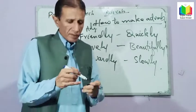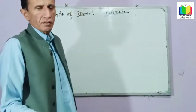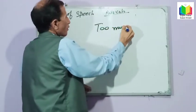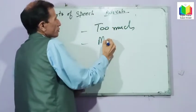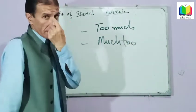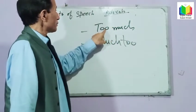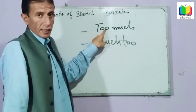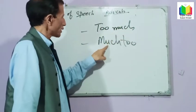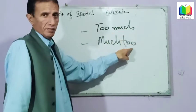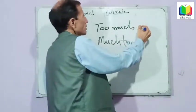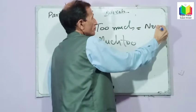After this, the common error we make: too much and much too. Remember — in 'too much', 'too' is an adverb and 'much' is an adverb, and after 'too much' a noun should follow.